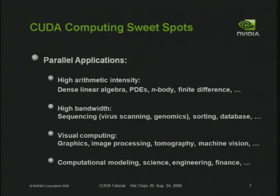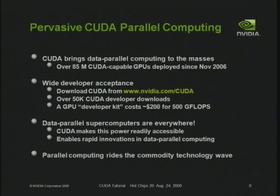Some of the sweet spots: applications tend to have high arithmetic intensity — lots of floating point or integer operations per piece of data fetched from memory. They tend to require high memory bandwidth; that GPU sustains over 100 gigabytes per second of DRAM memory bandwidth. They're good at visual computing — graphics, image processing, medical imaging, machine vision — and also very good at modeling physics, biology, and chemistry.